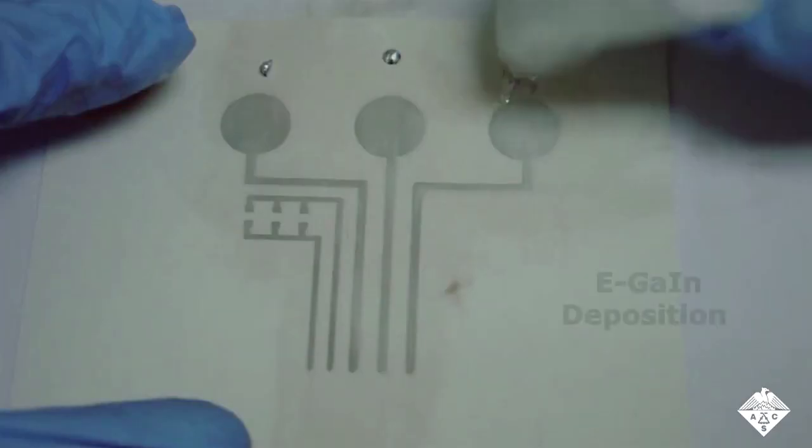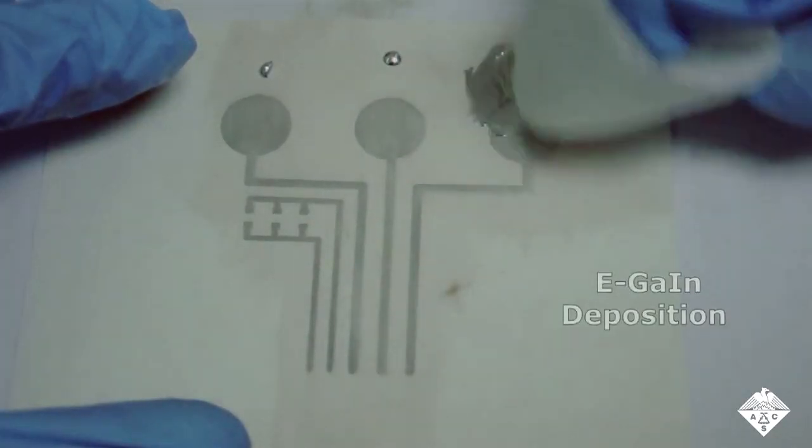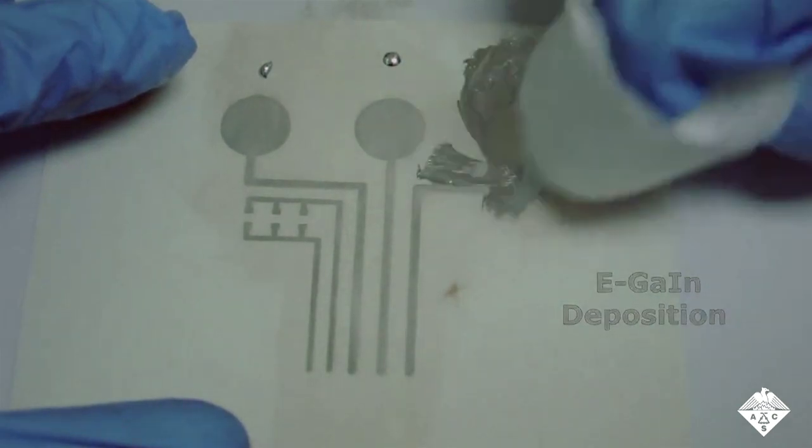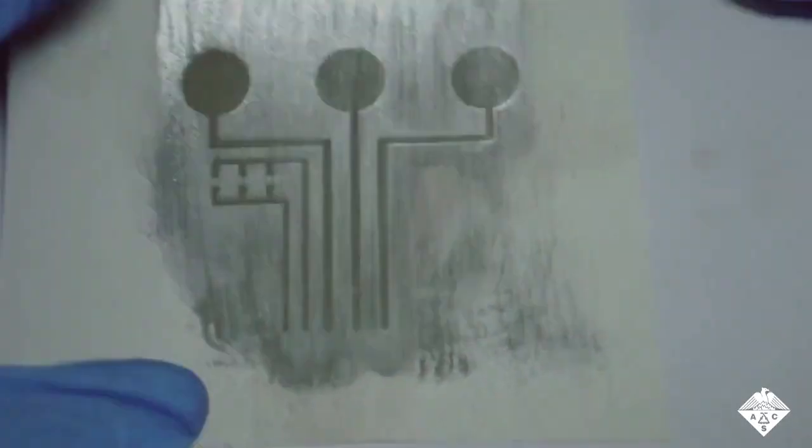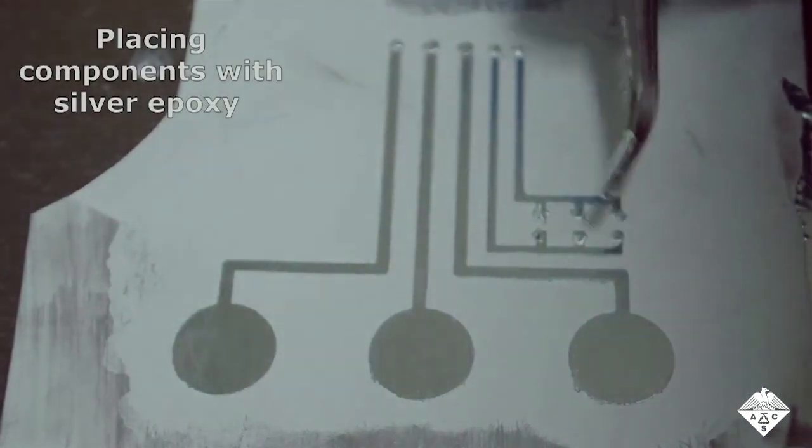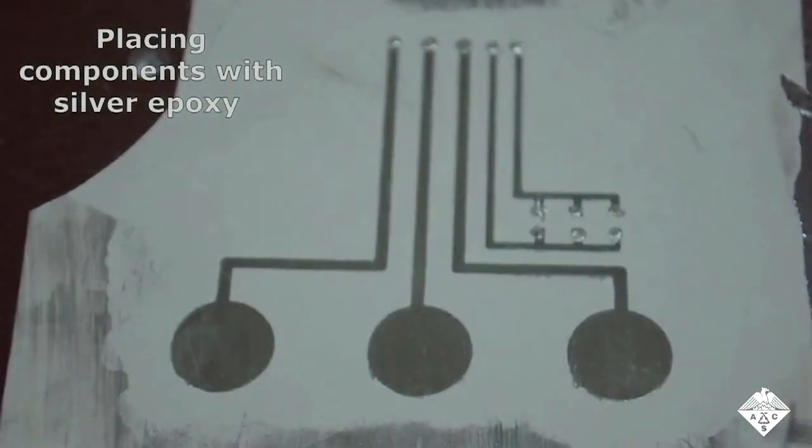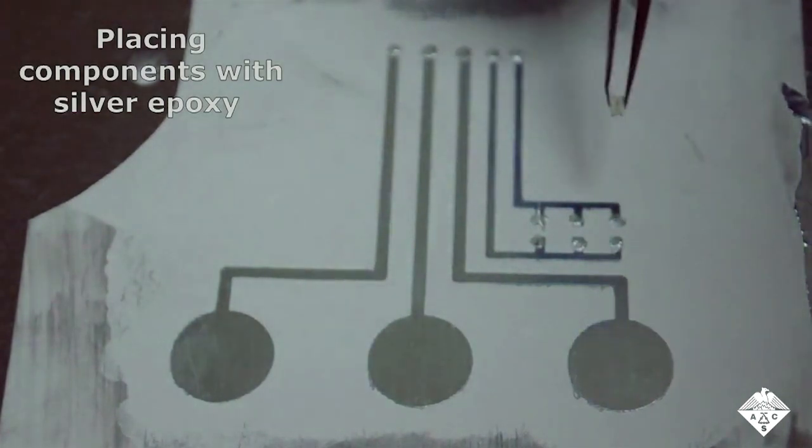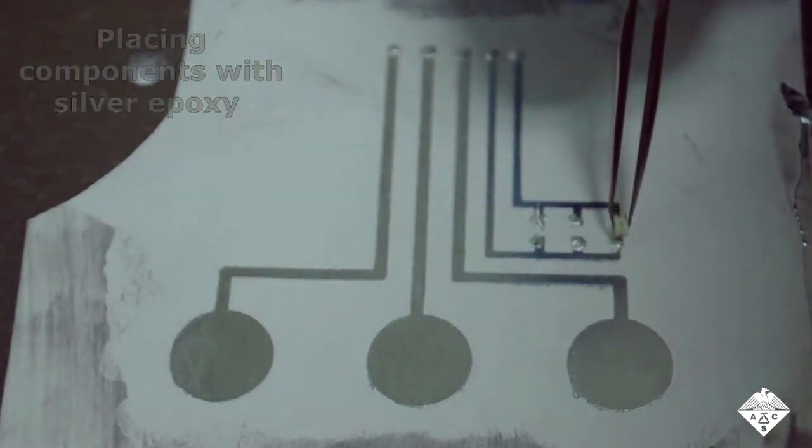On top of the silver paste, the team deposited a gallium-indium liquid metal alloy that increased the flexibility and electrical conductivity of the circuit. Finally, they added external electronics, such as microchips, with a silver epoxy or a conductive glue made of vertically aligned magnetic particles embedded in a polyvinyl alcohol gel.